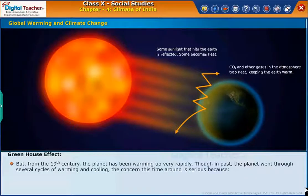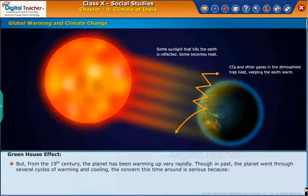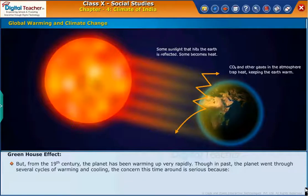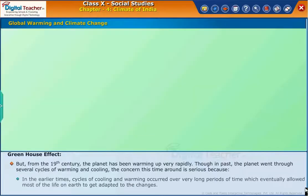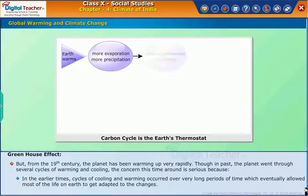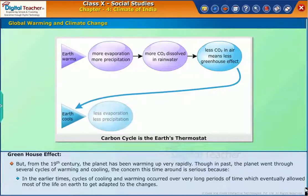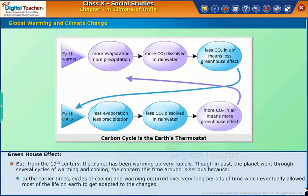But from the 19th century, the planet has been warming up very rapidly. Though in the past, the planet went through several cycles of warming and cooling, the concern this time around is serious because in earlier times, cycles of cooling and warming occurred over very long periods of time, which eventually allowed most of the life on earth to get adapted to these changes.